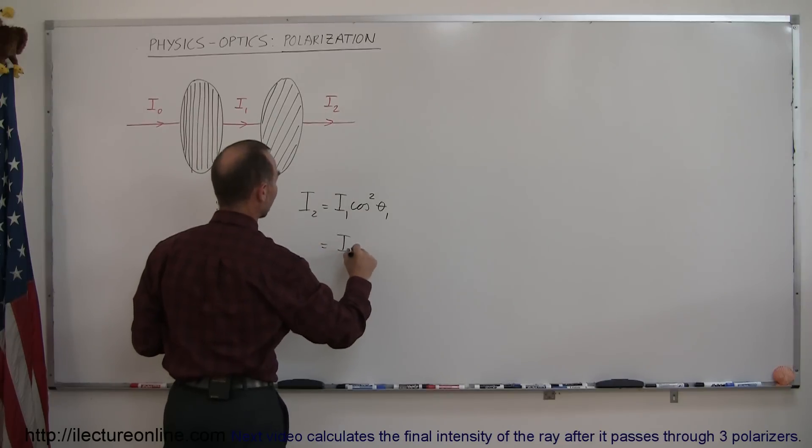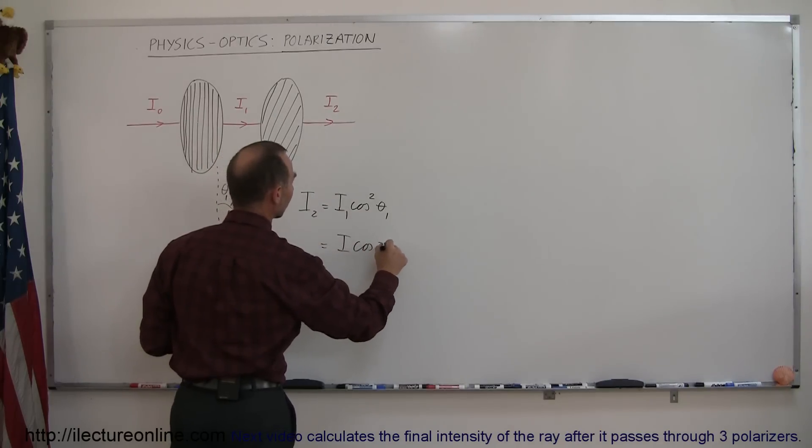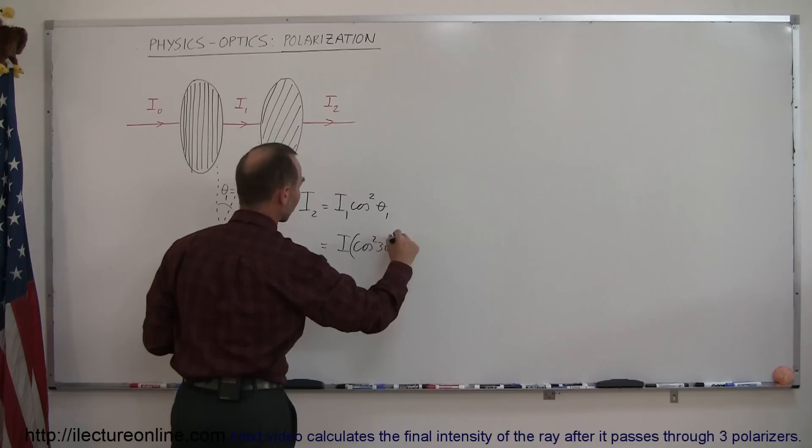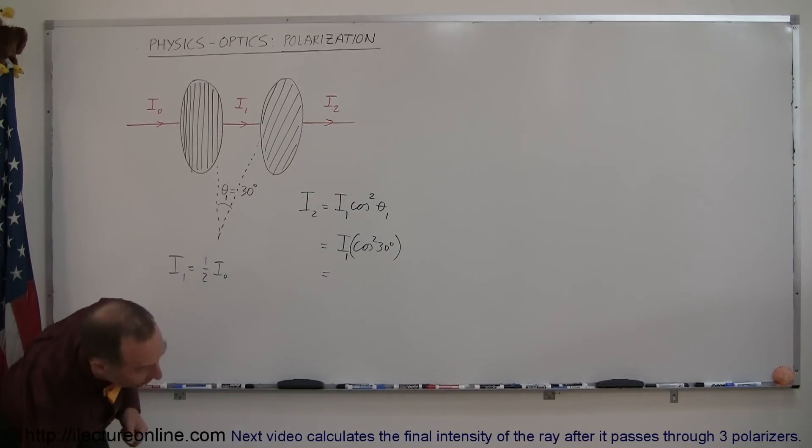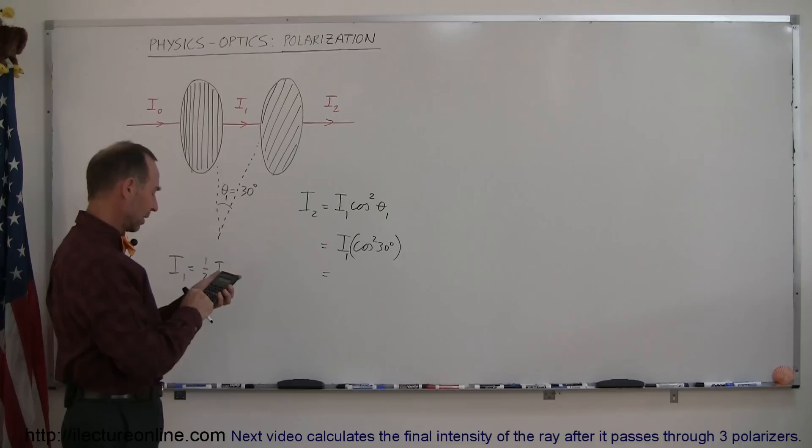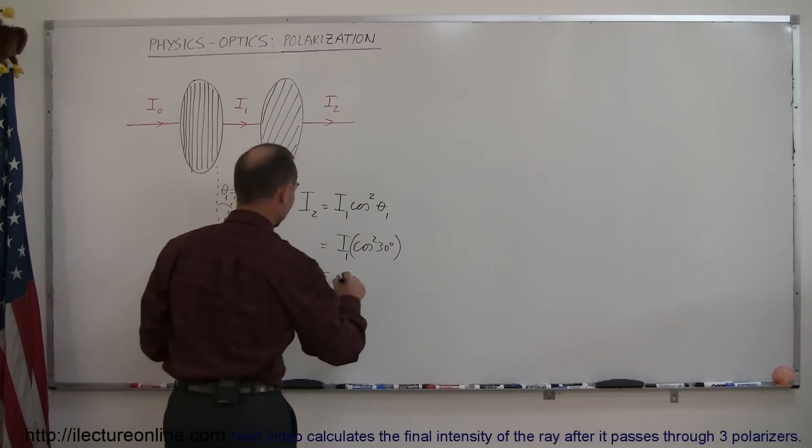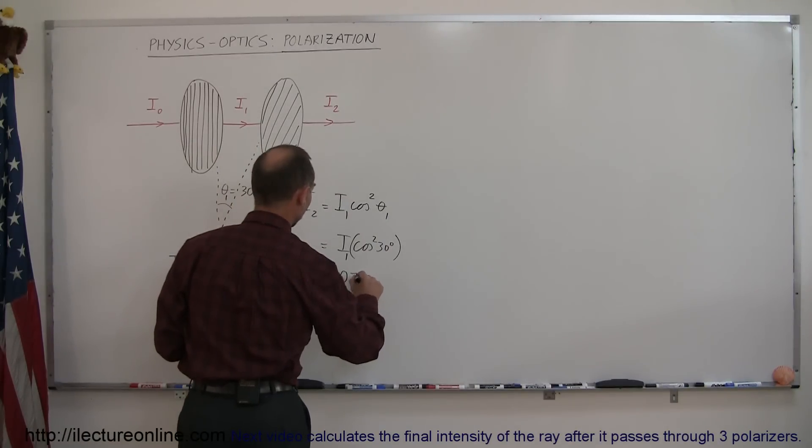this is equal to i sub 1 times the cosine of 30 degrees, and that would be the cosine squared of 30 degrees. There's my i sub 1, and let's see what that is equal to. So we take the cosine of 30 right here, and then we square that, and we can say that this is equal to 0.75 times i sub 1.